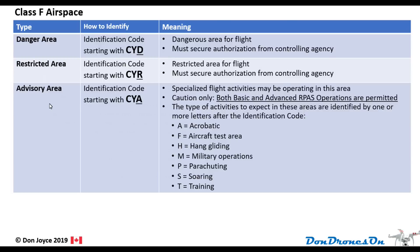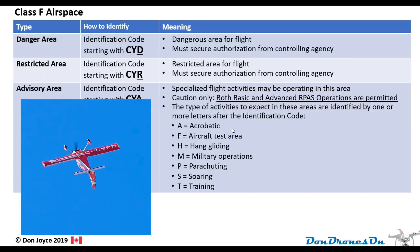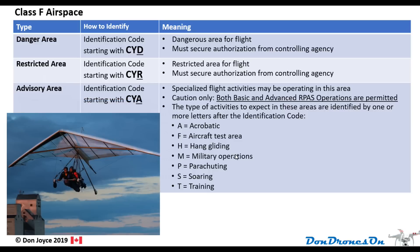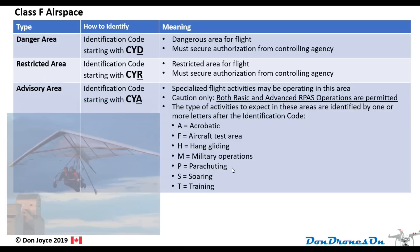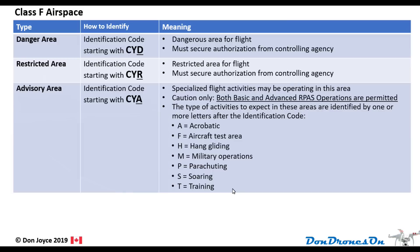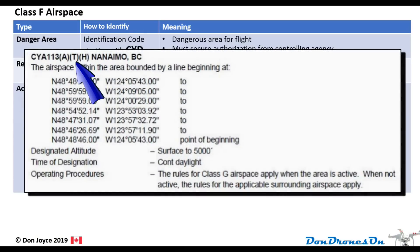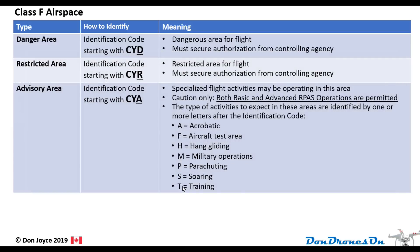The third type of class F airspace is totally different. These are called Special Use Advisory Airspaces, designated by identifiers starting with CYA — A for advisory. These areas can have one or more of the following operations taking place when active: aerobatics, aircraft test areas, hang gliding, military operations, parachuting, soaring, and training. For the most part, you're permitted to fly in these class F advisory areas as long as you follow the regular rules and stay on the lookout for these operations.